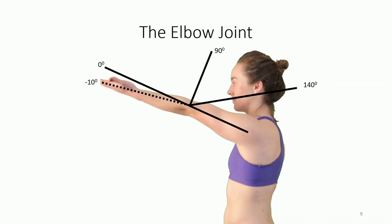The bony architecture at the elbow dictates the extent of movement that can occur. Full extension is limited by the locking of the olecranon process into the olecranon fossa, creating a firm, bony end feel to full extension. The degree of extension varies noticeably from person to person. In some individuals, such as those with Turner syndrome, the elbow may not reach full extension before the olecranon contacts the fossa. In others, the elbow is allowed to extend past 180 degrees before bony elements approximate — a condition known as cubitus recurvatum. Elbow flexion, in contrast, is limited by compression of soft tissues and is mostly dictated by the size of the muscular compartments, resulting in a soft tissue end feel, typically around 140 degrees.